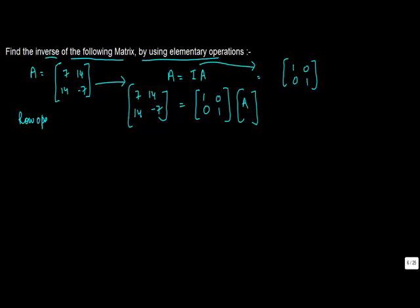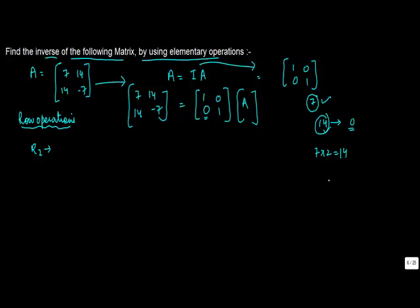Let's try to do this by row operations. First, we'll apply an operation to row 2. If you see, row 2 has 14 in the first position, and row 1 has 7. What we want is for that 14 to become 0. Since 7 times 2 equals 14, and 14 minus 14 equals 0, if we multiply R1 by 2 and subtract it from R2, we will get a 0 in that place.